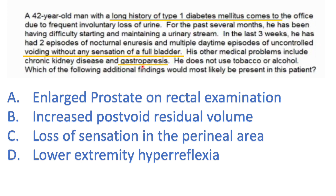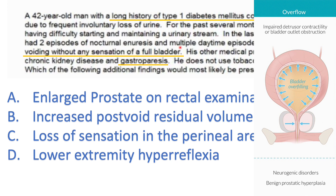He has multiple daytime episodes of uncontrolled voiding without any sensation of a full bladder. The neuropathy first involves afferent nerves, so he doesn't feel his bladder filling. It keeps filling until pressure exceeds the urethral sphincter and just overflows. Later, when efferent nerves are also affected, the patient cannot contract the detrusor muscle — so even when trying to start and maintain a stream, there is impaired detrusor contractility.